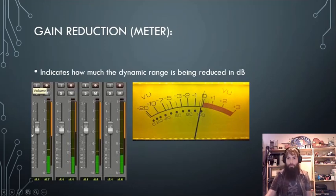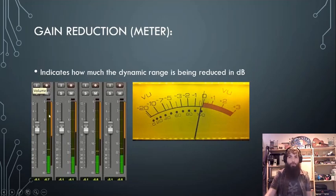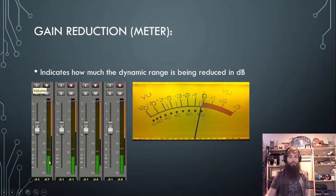In Pro Tools, they have a little dialog box that pops up whenever you insert a compressor — a meter that shows just how much gain reduction. It comes from the top and makes its way down. If it were super compressed, it would be compressing all the way to the bottom.